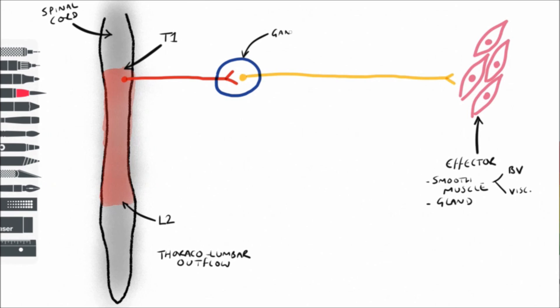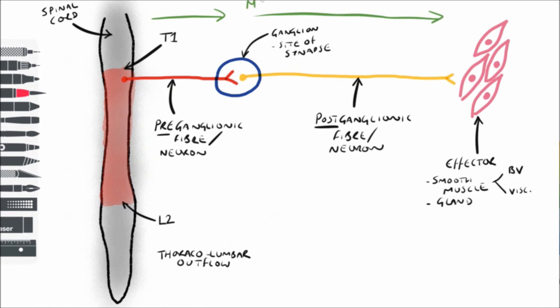Their path consists of two multipolar neurons which synapse in a ganglion outside the spinal cord, then end at the effectors which can either be smooth muscle, found in the blood vessels and viscera, or glands.